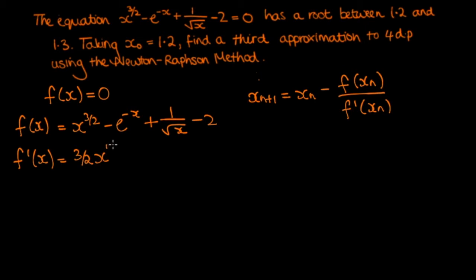The derivative of minus e to the minus x is minus e to the minus x times the inner derivative, which is minus 1, and so we get plus e to the minus x. The derivative of 1 over the square root of x is the derivative of x to the minus 1 half, so we get minus 1 half x to the minus 3 over 2. And the derivative of a constant is just 0. So now we have f of x and we have f prime of x.